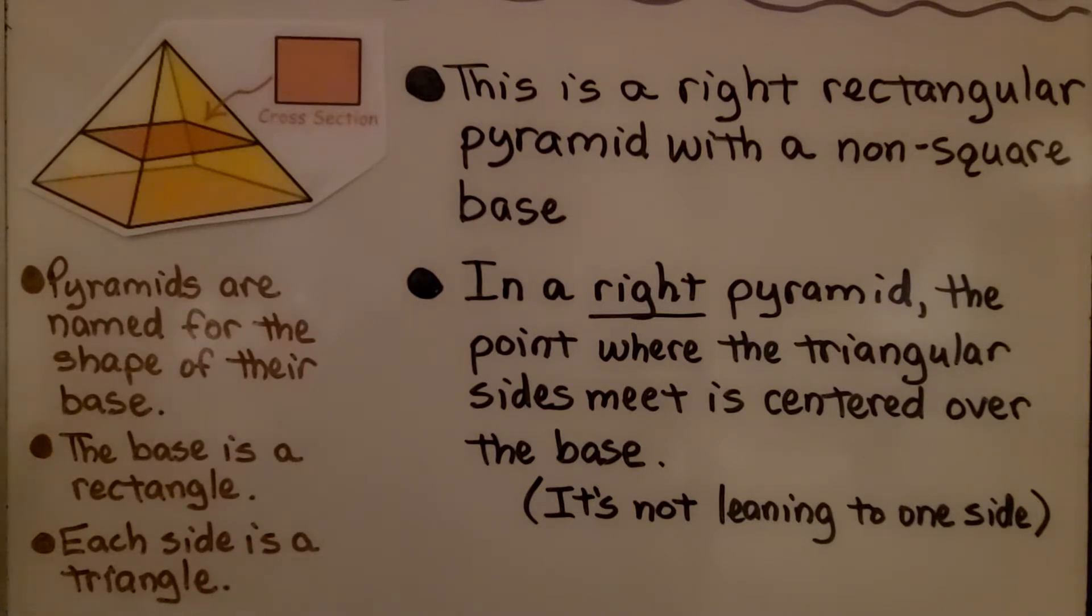Pyramids are named for the shape of their base. The base is a rectangle. Each side is a triangle. But since it's named for its base and the base is a rectangle, this is a rectangular prism.